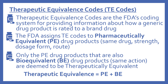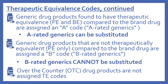Now we'll talk about the therapeutic equivalence codes, or TE codes. TE codes are the FDA's coding system for providing information about how a generic drug product is rated relative to a brand drug. The FDA assigns TE codes to pharmaceutically equivalent drug products — those with the same drug, same strength, dosage form, and route. Only the pharmaceutically equivalent drug products that are also bioequivalent are deemed therapeutically equivalent. So therapeutic equivalence requires both pharmaceutical equivalence and bioequivalence. Generic drug products found to have therapeutic equivalence compared to the brand drug are assigned an A code.